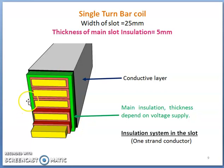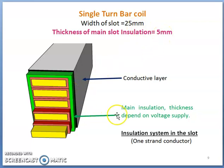In single turn bar coils, the width of the slot is typically 25 mm. The thickness of main slot insulation depends upon voltage. For voltage rating up to 10 kV, the thickness of main insulation is 3.6 mm; for 11 kV it is 3.8 mm; for 16 kV it is 5.1 mm; and for 18 kV it is 5.6 mm. As the voltage of the machine increases, the thickness of main insulation must increase because dielectric strength depends upon thickness of insulation.